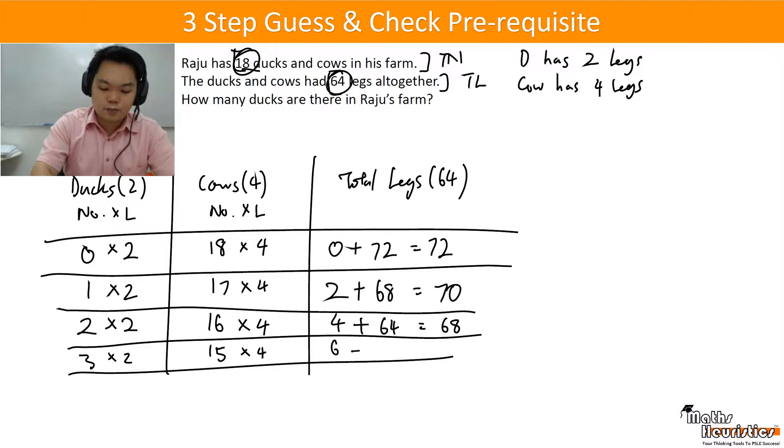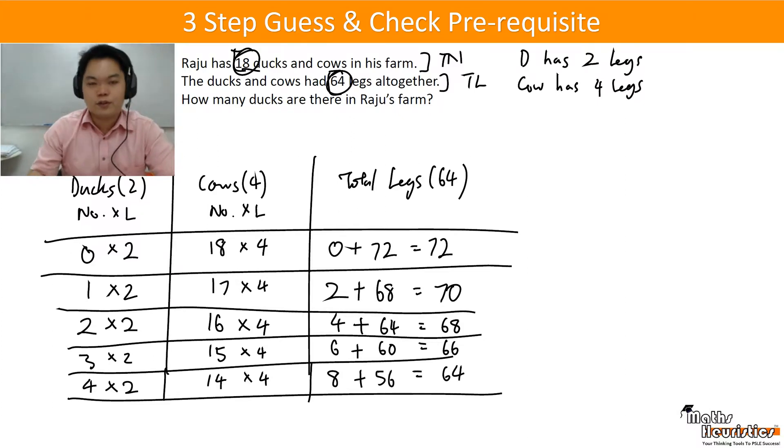I replace one more. Then I have 6 plus 60 to give you 66. So I haven't reached yet. What to do? Replace one more. Then I have 8 plus 56 and this gives me 64, which is the number of total legs that I want. So then how many ducks are there? There will be 4 ducks. So problem settled.